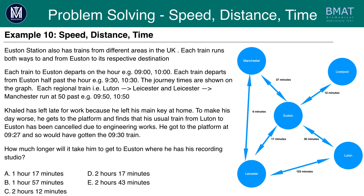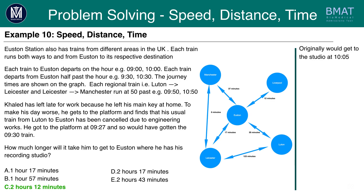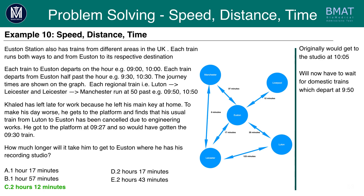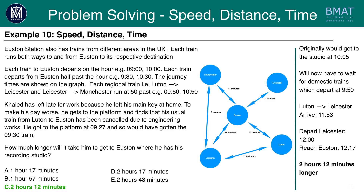Have a go at this question now by pausing the video. The answer you should have gotten here is C. Originally, Khalid would have got to the studio at 10.05, because he would have gotten the 9.30 train and it takes 35 minutes. Now he will have to wait for the domestic trains, which depart at 9.50. He will go from Luton to Leicester and arrive at 11.53, since it takes 123 minutes. He will then wait until 12.00 to get the train from Leicester to Euston, arriving at Euston at 12.17. This is two hours and 12 minutes longer — therefore the correct answer is C, two hours and 12 minutes.